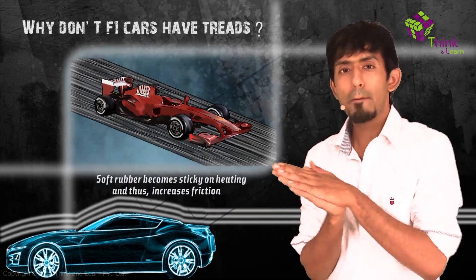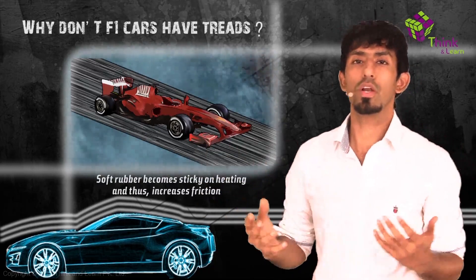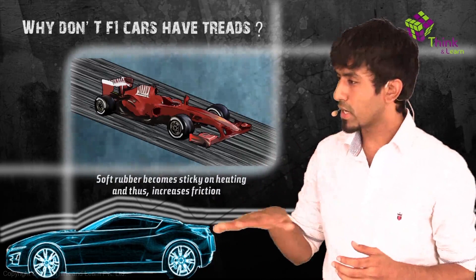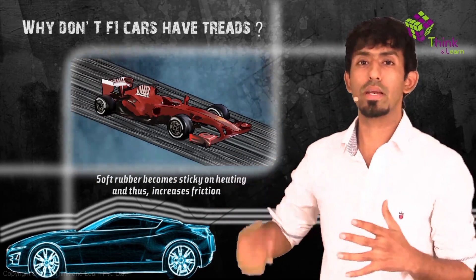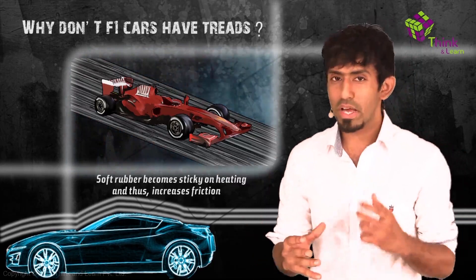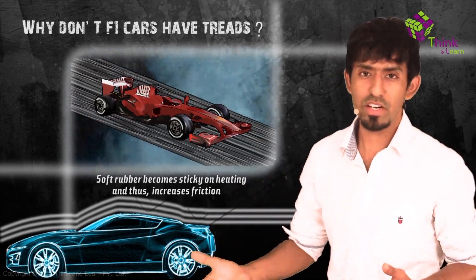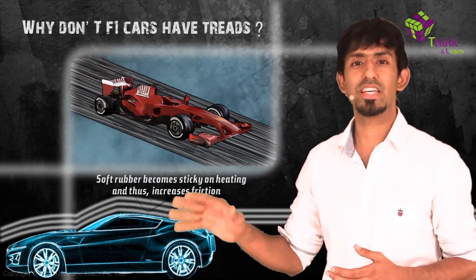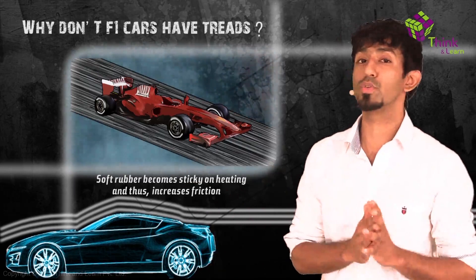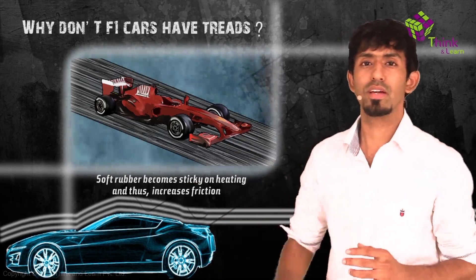The soft rubber gets hot during a trial run — called a burnout — where the car meananders to heat the tires. Once hot, the rubber becomes very sticky. If you ever had the chance to touch an F1 tire after a race, you'd notice it's extremely sticky. The rubber is very soft and begins to get very sticky with the road, giving a huge amount of friction — even without any treading.